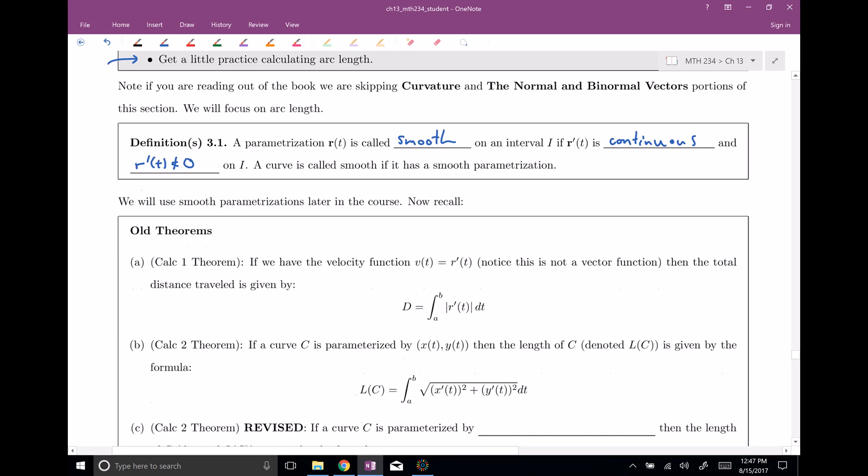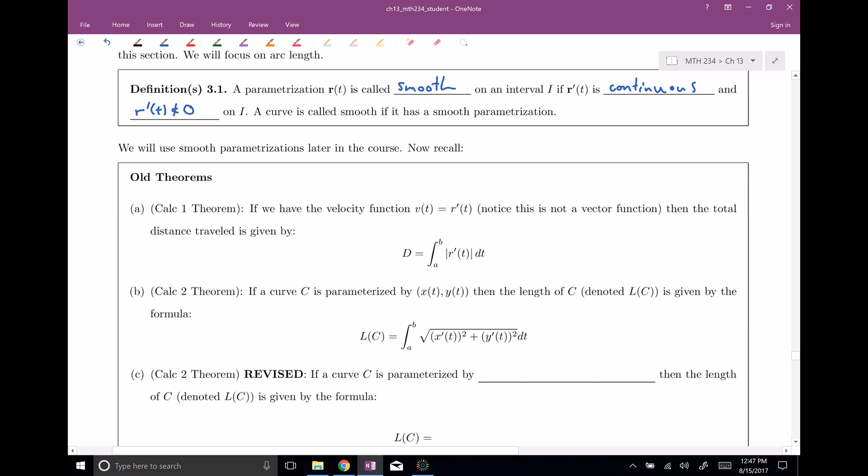Okay, so now let's go back and think about kind of our old definitions and theorems from calc one and calc two, and then we're gonna upgrade this for our calc three arc length function. So the claim is, back in the day, if you had a velocity, right, so this is some derivative of position, which I'm gonna call r prime of T, and this is not a vector function, right? Back in calc one, we were just doing, you know, single variable. We didn't have all this stuff about vectors. Then we could talk about the total distance traveled. Total distance traveled is a lot like arc length, is given by this distance is the integral from a to b of the absolute value of the derivative.